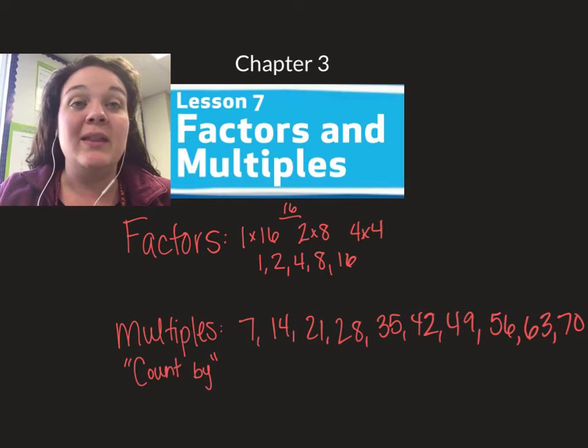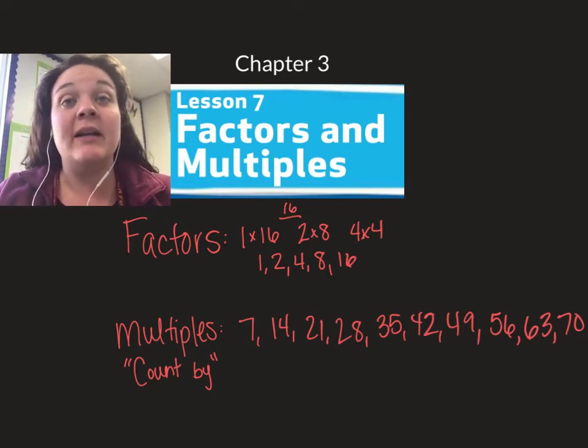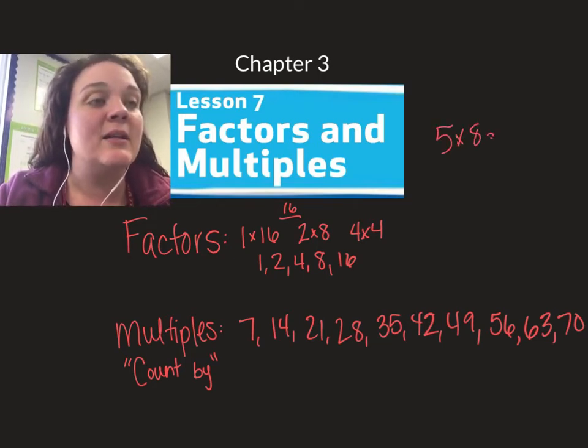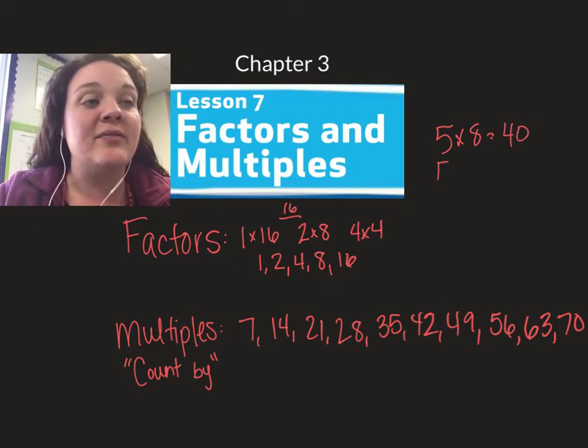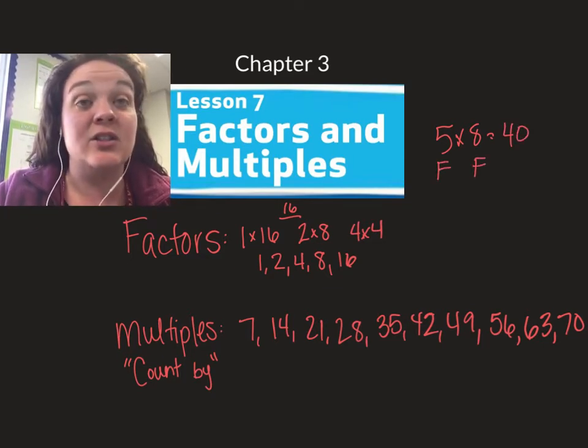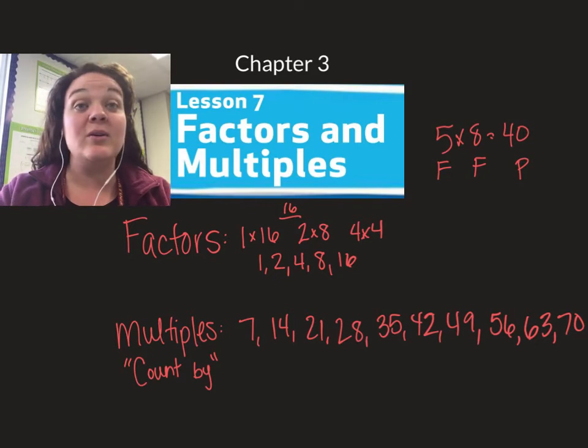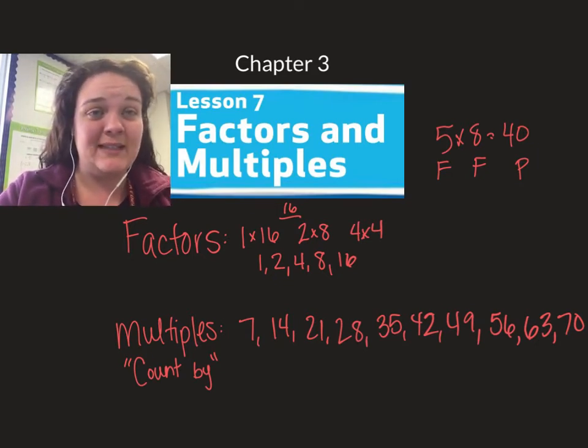So there's a big difference between the two. Factors we've already been talking about. Like if I say 5 times 8 equals 40, we know that this is a factor and this is a factor. The two numbers are multiplying together and then 40 is our product. So those are factors - numbers we're multiplying together.